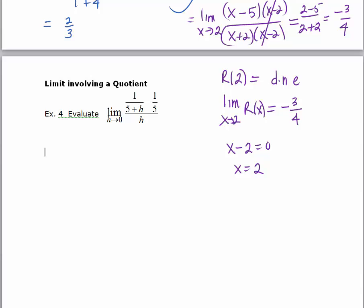And if we wanted to fill that hole in, we know that once we cancel the common factor, when we evaluated 2 minus 5 over 2 plus 2, we got negative 3 fourths. We know that the actual hole, the ordered pair that represents that hole is going to be 2 comma negative 3 fourths.